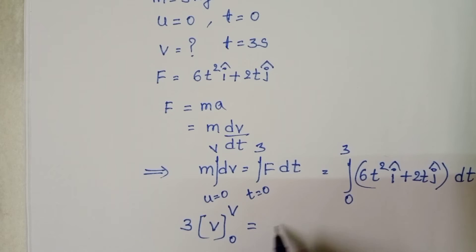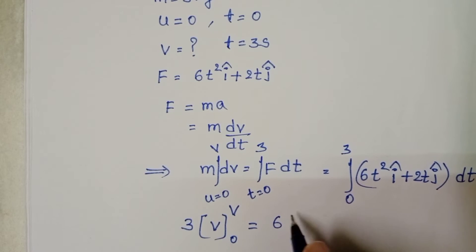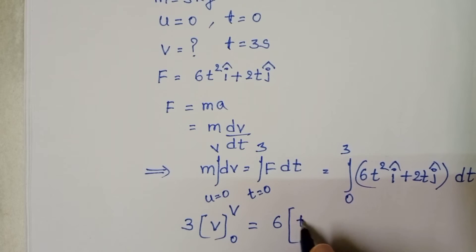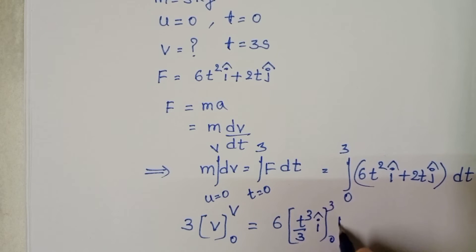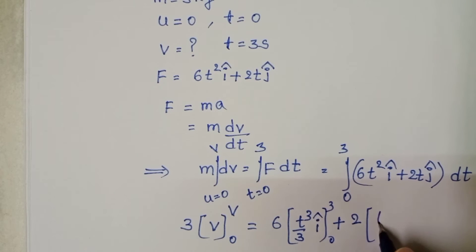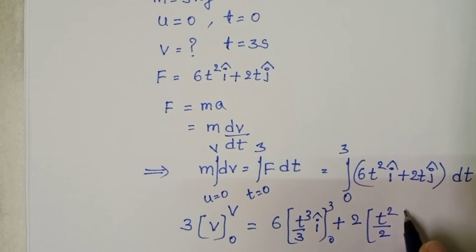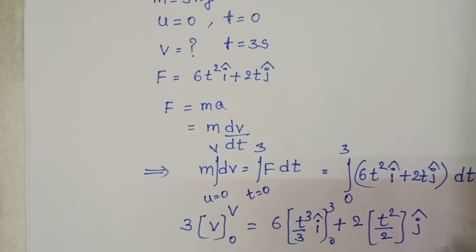6 is constant, integral T² gives T³/3 î plus 2 times integral T gives T²/2 ĵ.